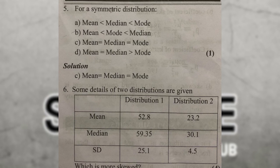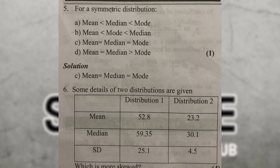Some details of distributions are given below: mean, median, and standard deviation for Distribution 1 and Distribution 2. Which is more skewed? We calculate skewness for both distributions. Using the empirical relationship: mean minus mode equals 3 times (mean minus median). So the formula becomes 3 times (mean minus median) divided by standard deviation for Distribution 1 and Distribution 2.